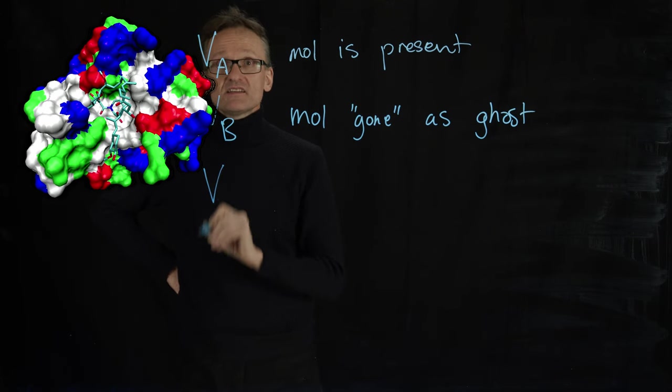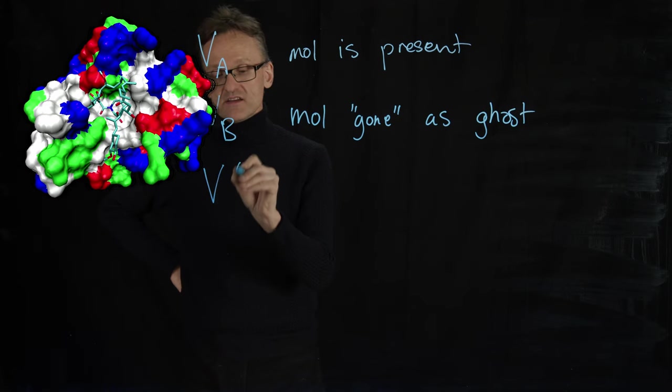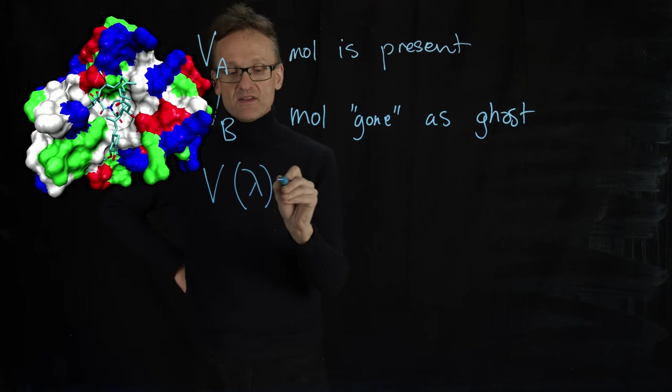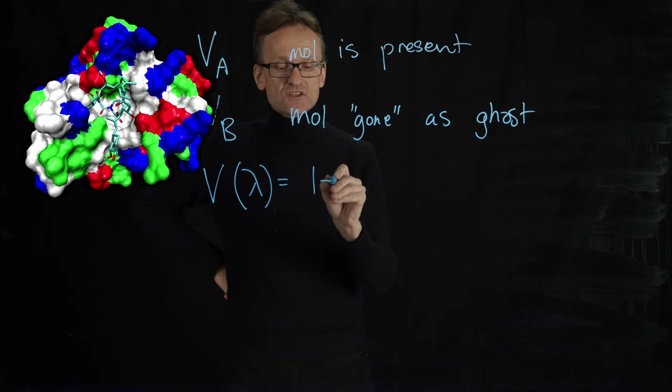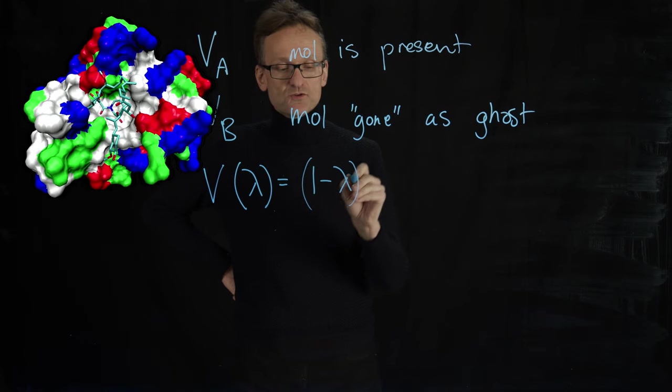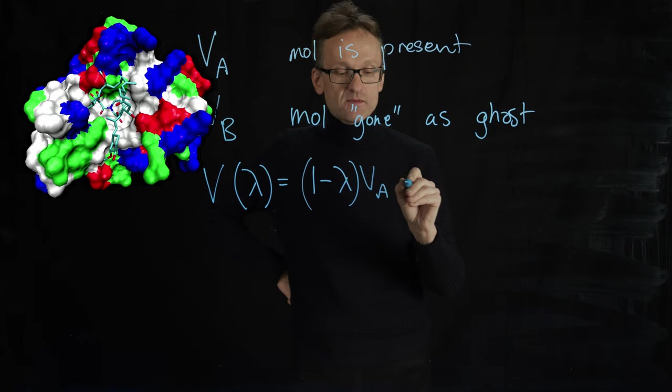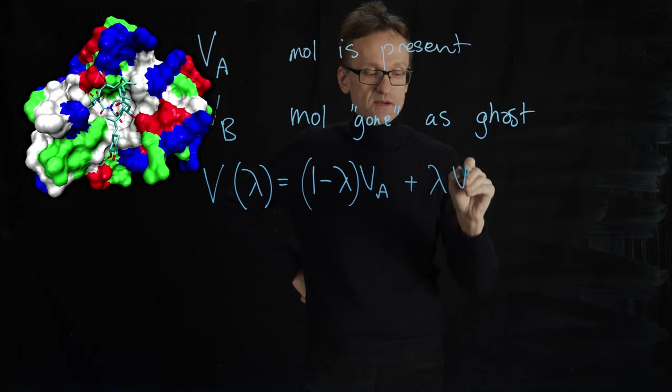But what if I instead define a new potential here that is a function of a parameter lambda, and then I just interpolate between these two systems: one minus lambda times VA plus lambda times VB.